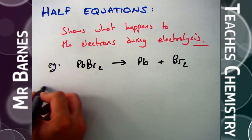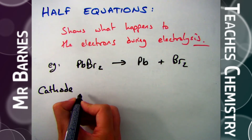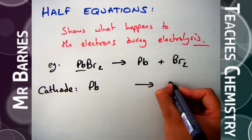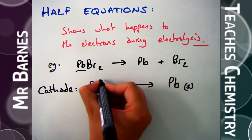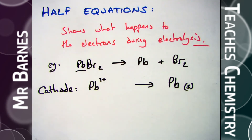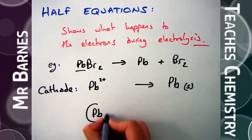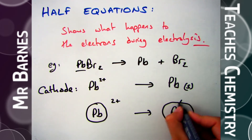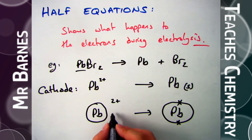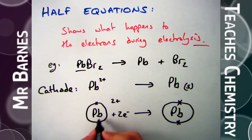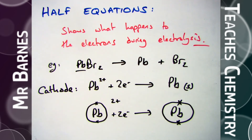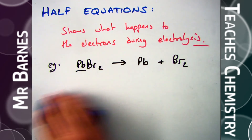If I have molten lead bromide, when I electrolyse it, it will turn back into lead which will go to my cathode, and bromine which will go to my anode. At the cathode, the lead ions are turning back into the metal lead. So I start with Pb²⁺ and end up as Pb. If something is 2+, it means it's lost electrons, so I need to give it two more electrons. My half equation is: Pb²⁺ + 2e⁻ → Pb(s).